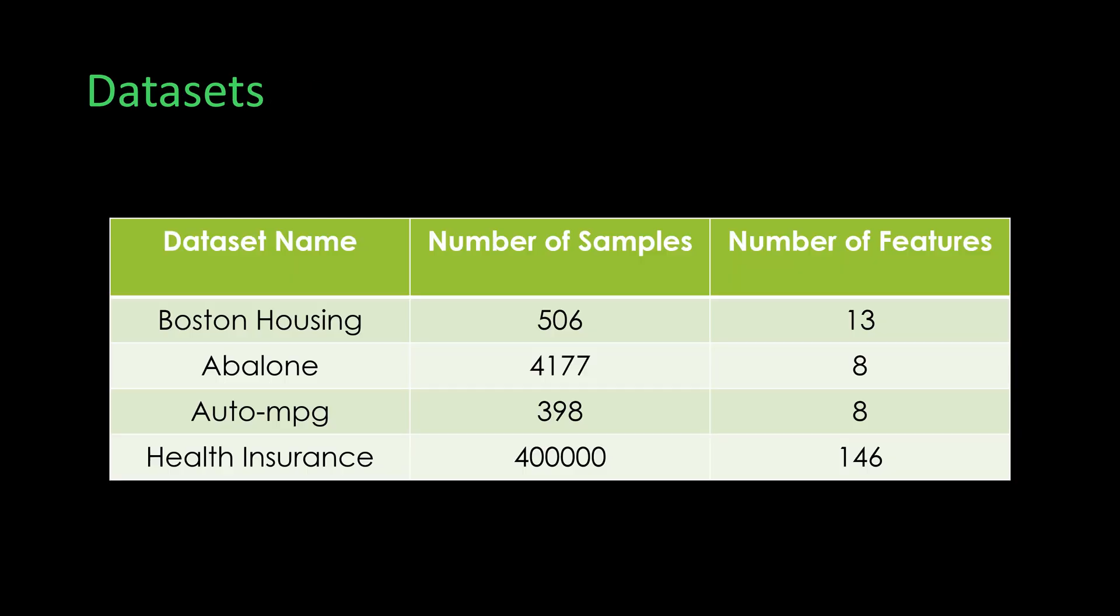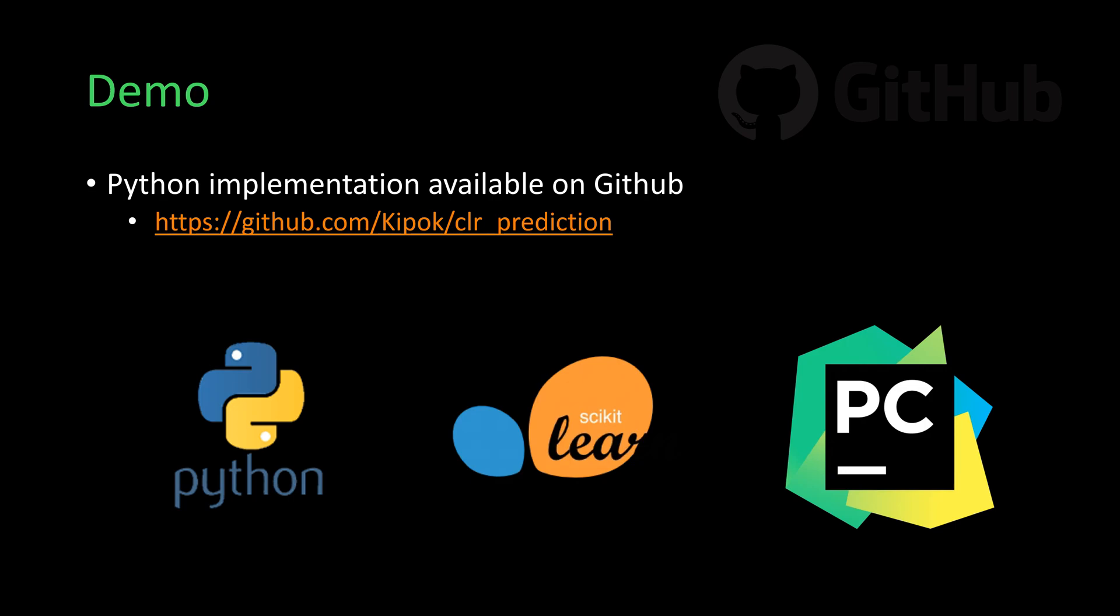The authors evaluate the proposed techniques on three UCI ML repository datasets, which are the Boston Housing, Avalon, and AutoMPG datasets. Furthermore, they conduct an experiment on the health insurance dataset, which is a quite large dataset that contains medical claims of patients from a particular health insurance provider. The authors implemented their prediction methods using Python 2. And the Python code, including all the experiments described in this paper, is available on GitHub.